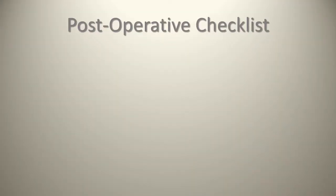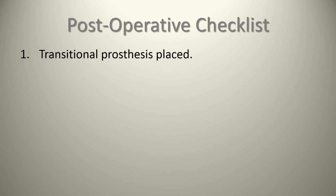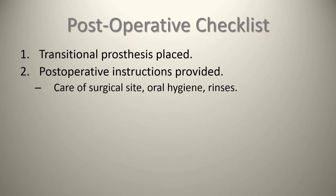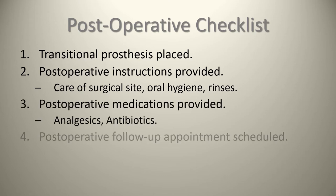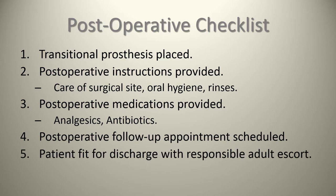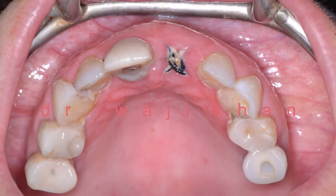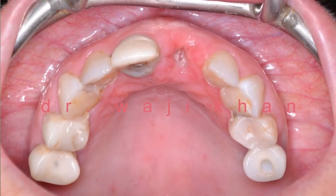The post-op checklist includes ensuring the transitional prosthesis has been placed, post-op instructions for care of the surgical site, oral hygiene and rinses, post-op medications including analgesics and antibiotics, and that the follow-up appointment is scheduled with the patient fit for discharge with a responsible adult escort. At the 7-day follow-up there is some plaque buildup around the sutures, though no issues, and nice maintenance of soft tissue volume from the buccal-lingual perspective. Sutures are removed.